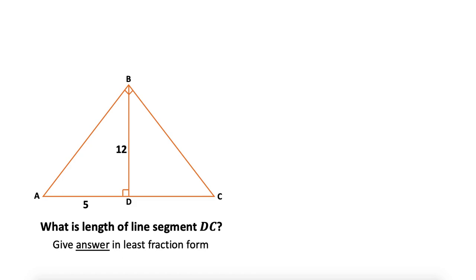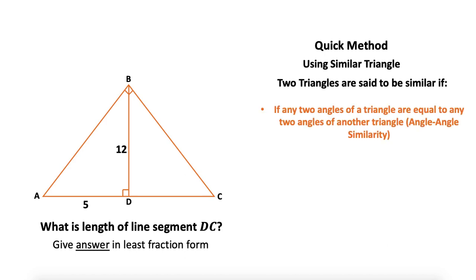So now let's see the next method, which is a quick and efficient method, that is by using similar triangles. Just a quick introduction: two triangles are said to be similar if any two angles of one triangle are equal to any two angles of another triangle. So if two angles are equal, that means all three angles are equal because sum of angles in a triangle equals 180 degrees. This is angle-angle similarity.